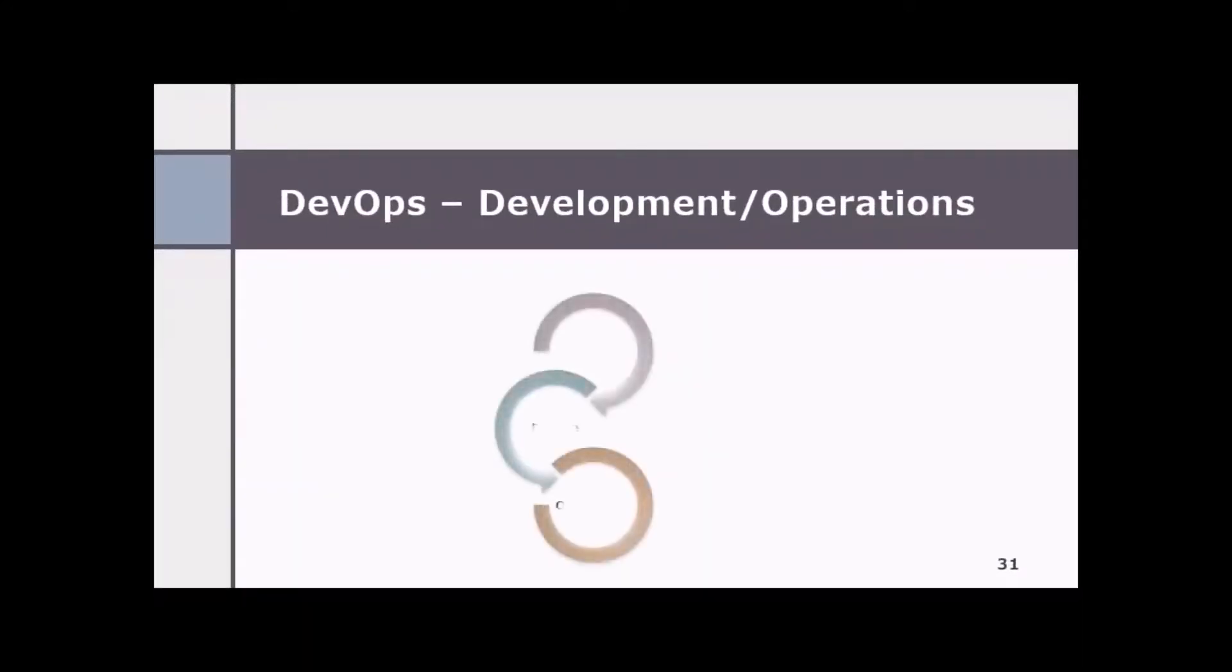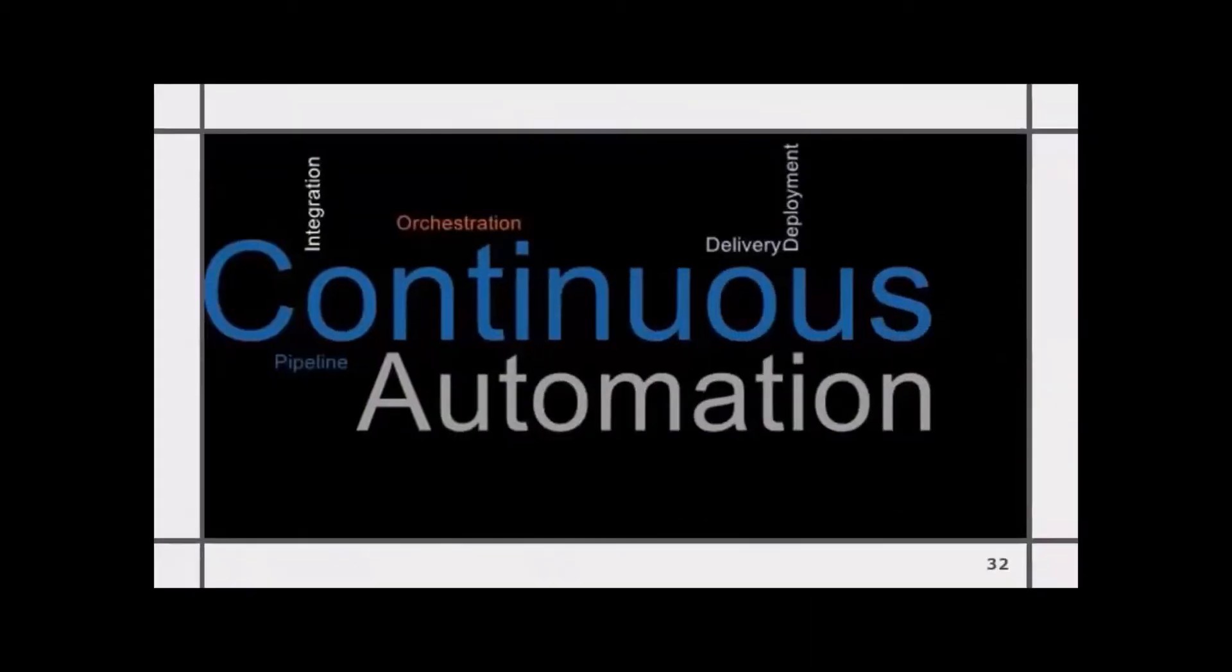DevOps practice is combination of development team and IT operations working together with set of tools, culture and philosophies that enable quick delivery of application and services for any AI project. Automation is at the heart of DevOps with continuous integration, continuous deployment and continuous delivery.